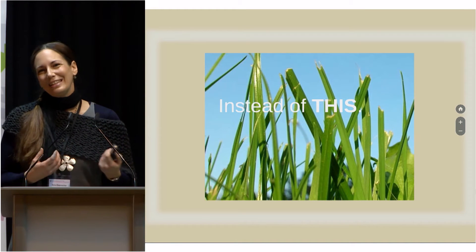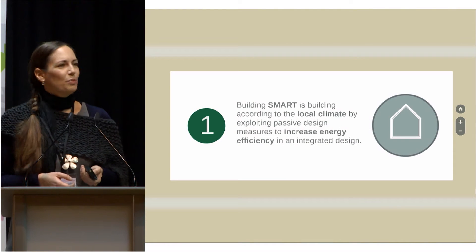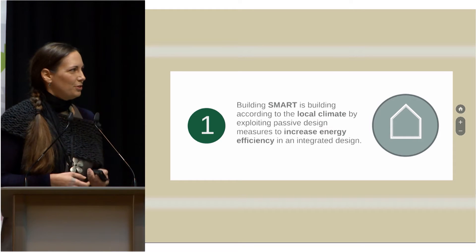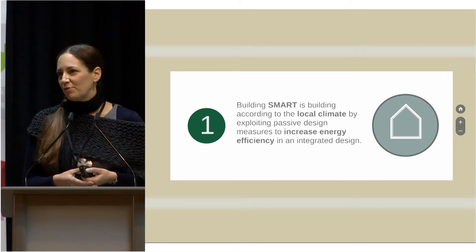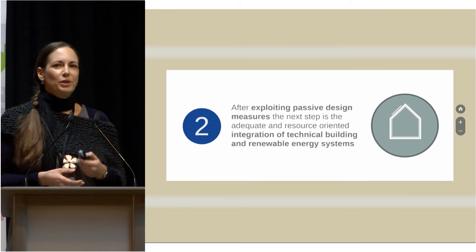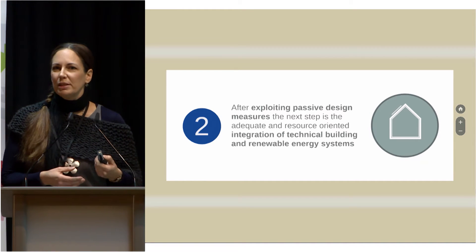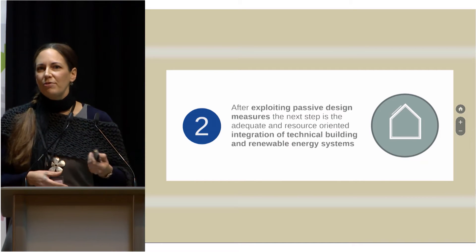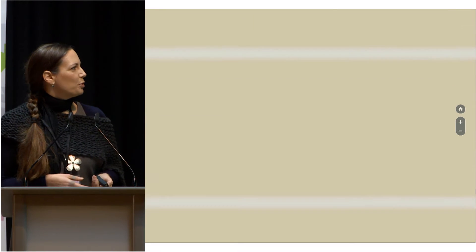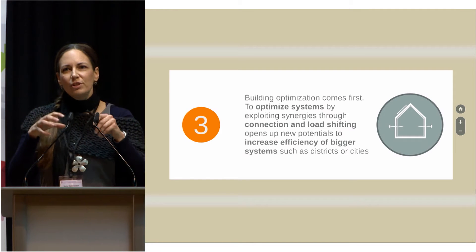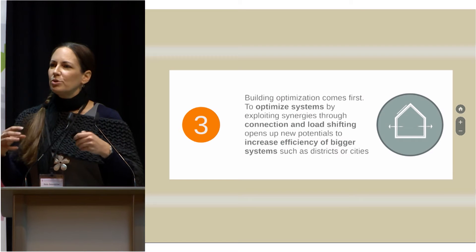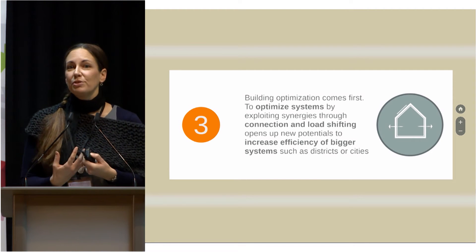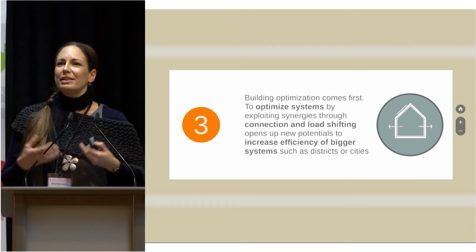To build smart is to build according to the local climate. We must understand the climate in order to build smart, and exploit passive design measures to increase energy efficiency — that should always be the first step. The second step is looking at the efficient technical building systems that connect systems within the building but also to the outside world, and of course the integration of renewable energy after we have exploited passive design measures. The third step is optimizing bigger systems — not just individual building systems, but the overall building, the district, or the city. That's where we call buildings smart — when we connect them.